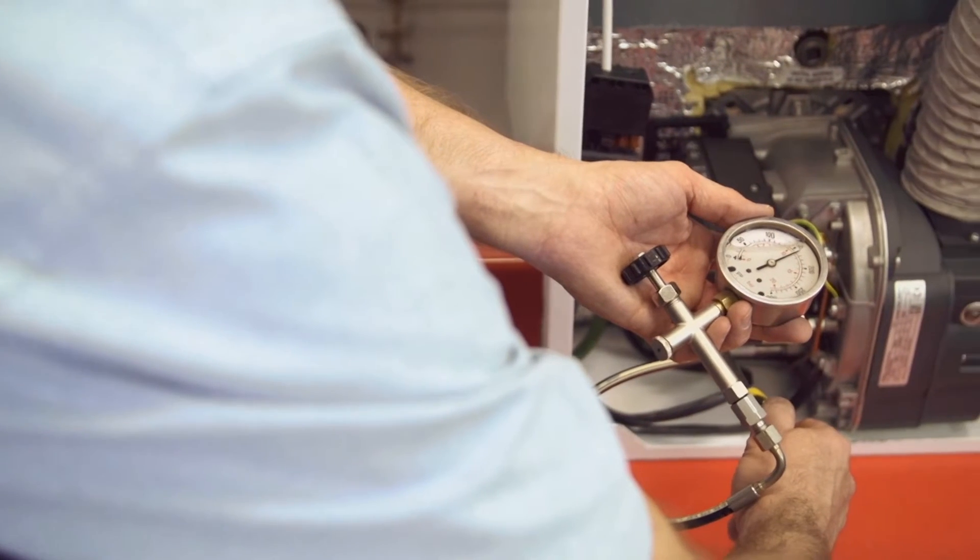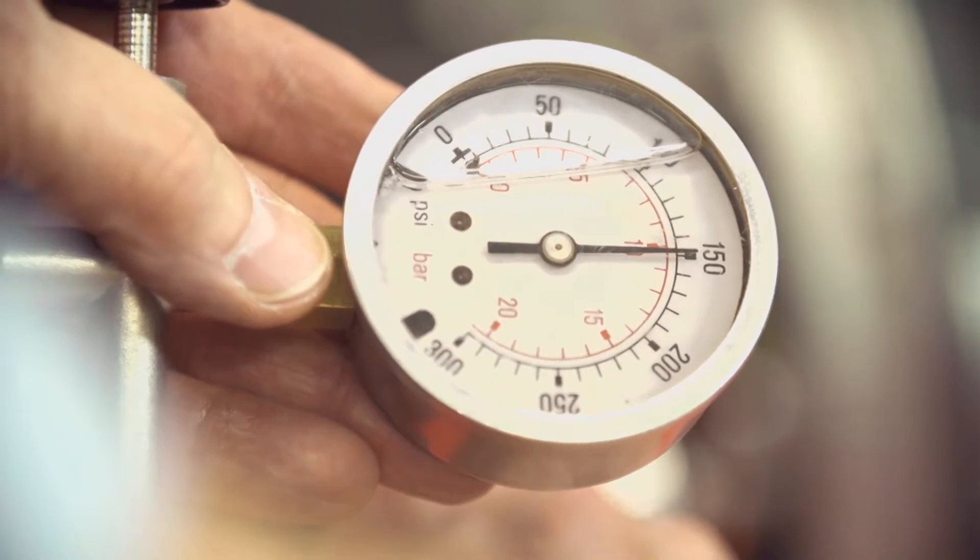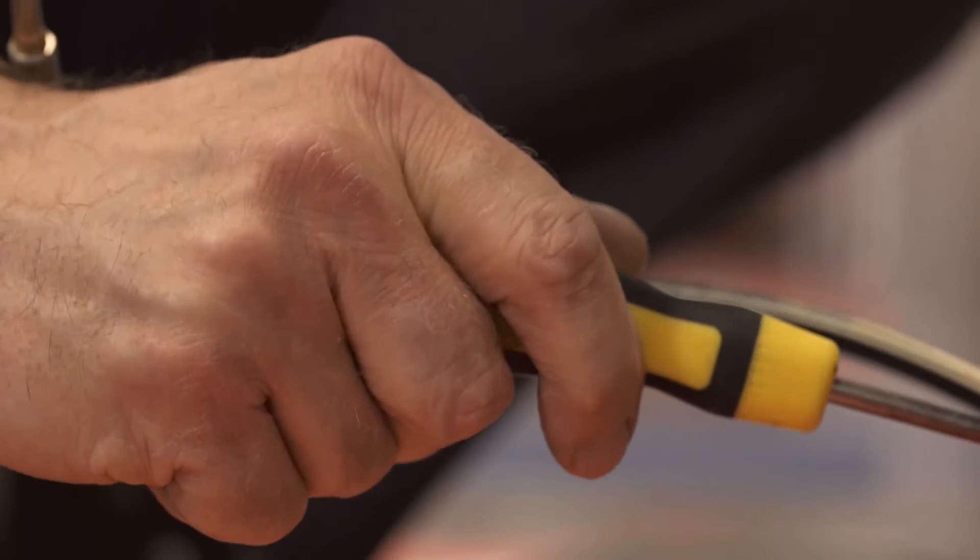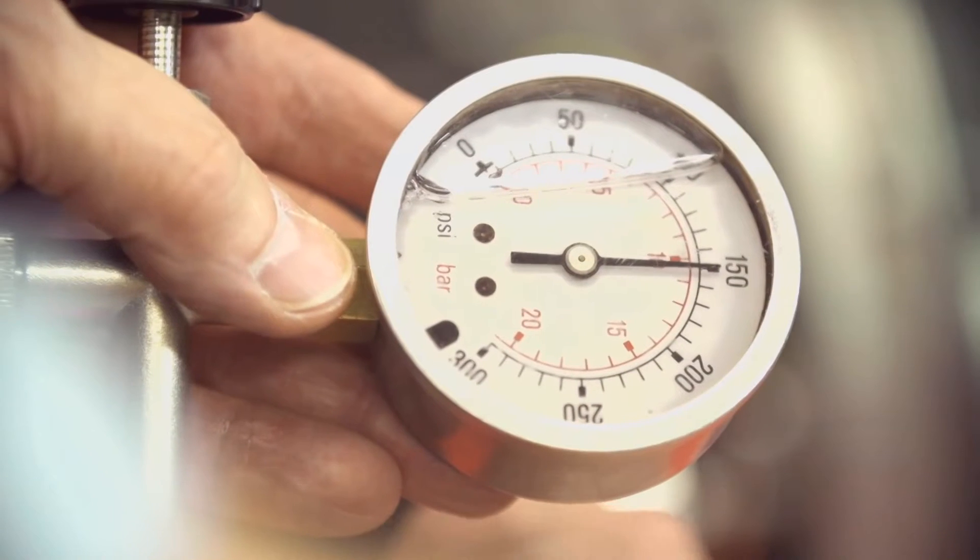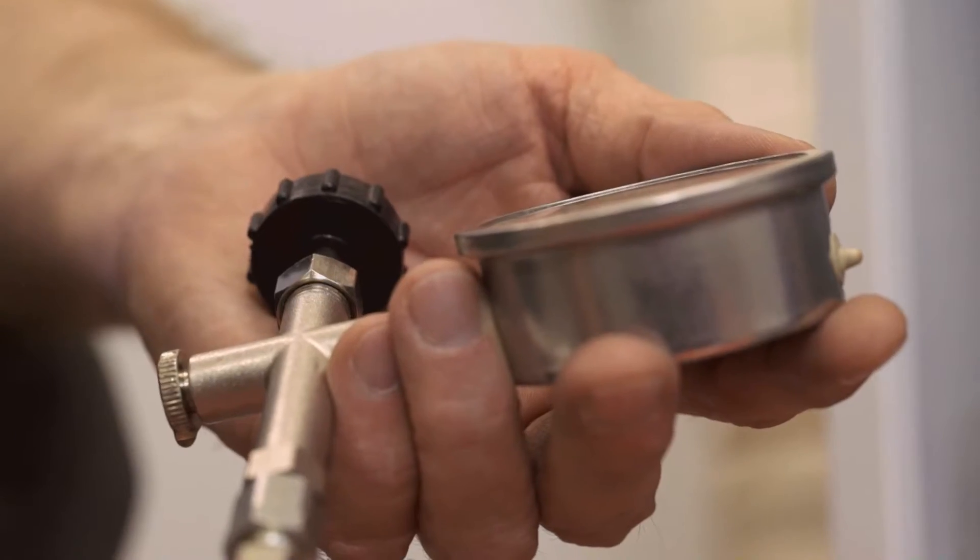Then check the oil pressure is correct for the boiler. This is also in the boiler installation instructions. If necessary, adjust the pressure by turning the adjuster on the pump clockwise to increase and anticlockwise to decrease.